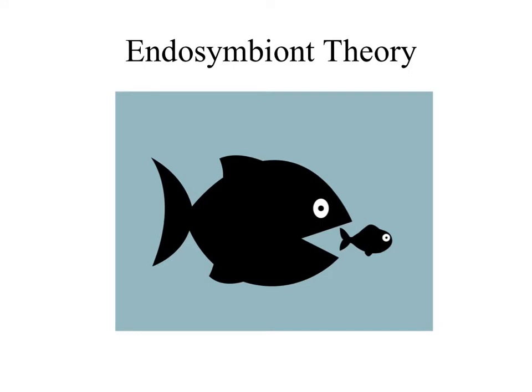So anybody know what endosymbiont theory means? The bigger ones eat the little ones — yes. So what organelles have two membranes and kind of support this theory? It would have the membrane of the original organism and then a new membrane of the larger organism, so it would have a double membrane.